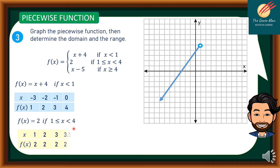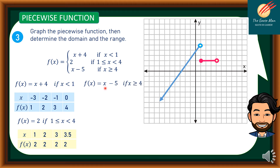For f(x) = 2 if 1 ≤ x < 4, the table of values gives: x = 1, f(x) = 2; x = 2, f(x) = 2; x = 3, f(x) = 2; x = 3.5 gives 2. This is a constant function. The point at x = 1 is included (closed) but x = 4 is excluded (hollow).